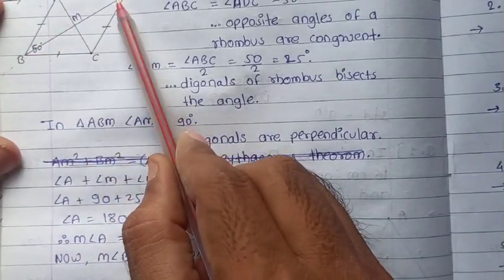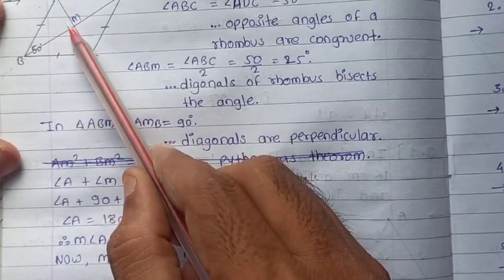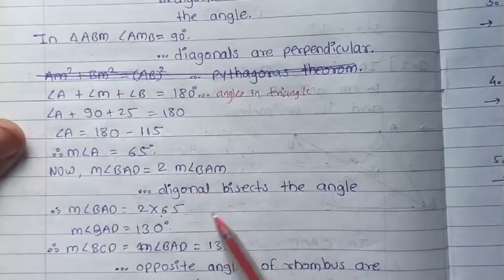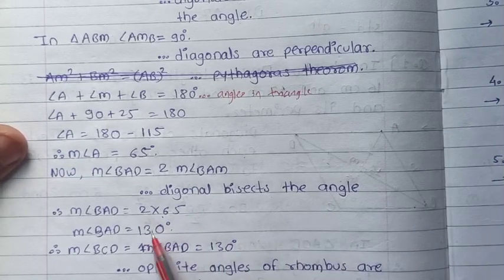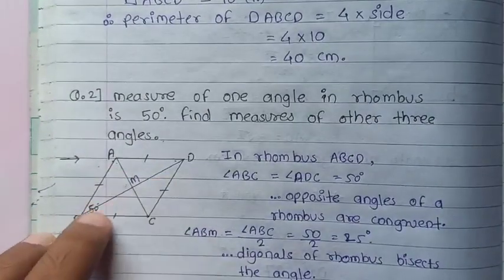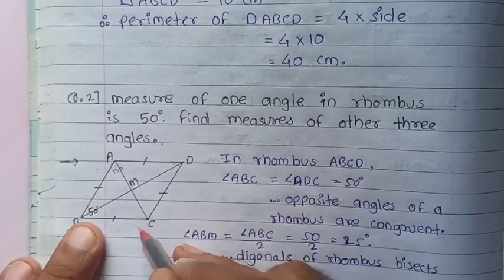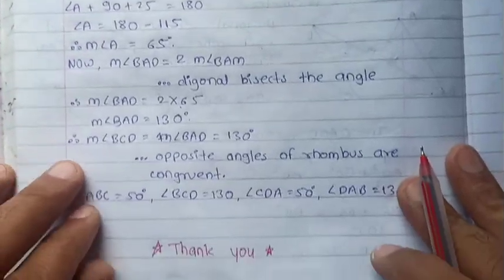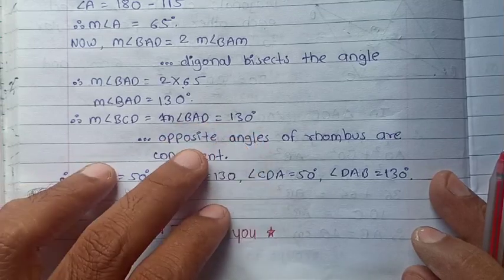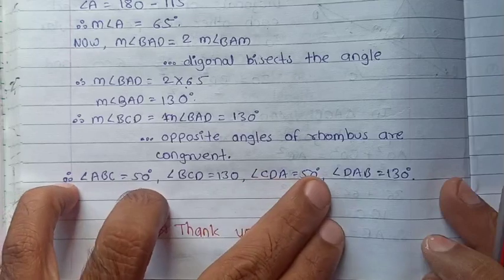Angle BAD equals double of angle BAM, because the diagonals bisect the angles. So angle BAD equals 2 times 65, which is 130 degrees. And by opposite angles of rhombus are congruent, angle BCD is also equal to 130 degrees. So the four angles of the rhombus are 50°, 130°, 50°, and 130°.